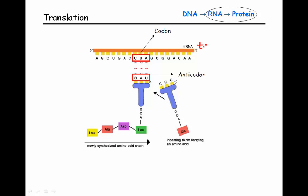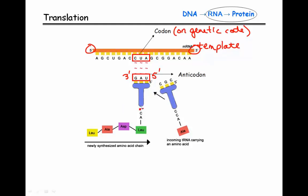The mRNA is our template, and we read it from the five-prime to the three-prime direction always. The codons contained in it are what we have on the genetic code table, so those are the ones we look up. The tRNAs have an anticodon on one end that is complementary and antiparallel to the codons. On the other side is the amino acid attached to the tRNA. For example, the codon GCG has anticodon CGC, and the amino acid attached is ALA — alanine. If you looked up GCG on the table, you would find ALA.